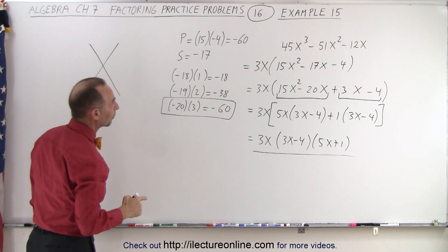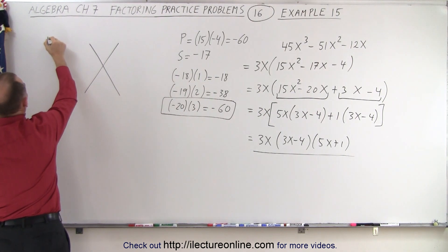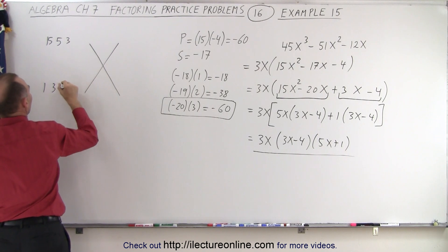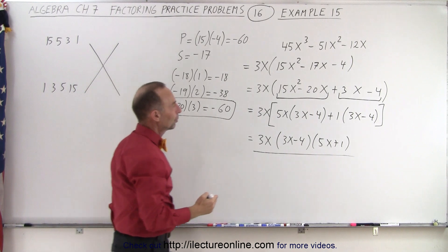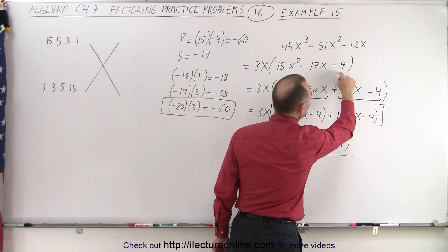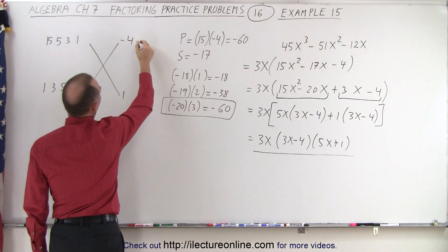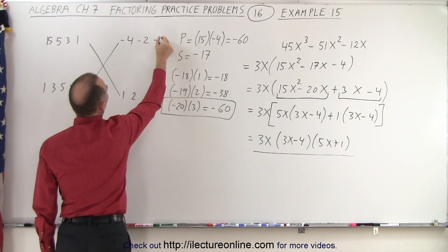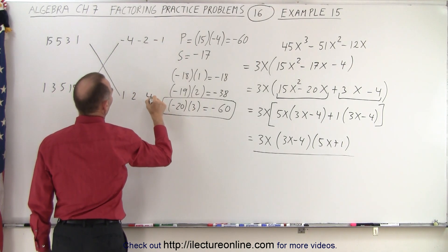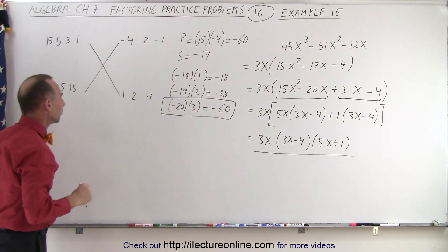On the left side, I'm going to put all the combinations that give me a 15: that could be 15 and 1, 5 and 3, 3 and 5, or 1 and 15. Next, on the right side, I'm going to put all the combinations that can give me a negative 4: that would be minus 4 and 1, minus 2 and 2, or minus 1 and 4. Those are all the combinations. I don't have to flip the signs because I have all the combinations ready on the left side.